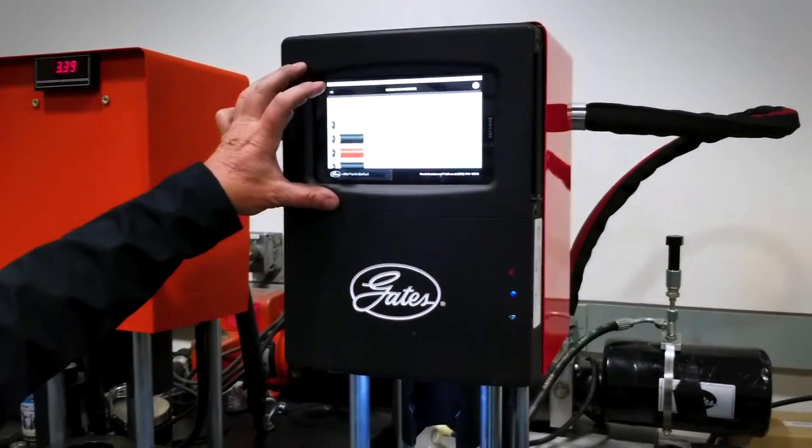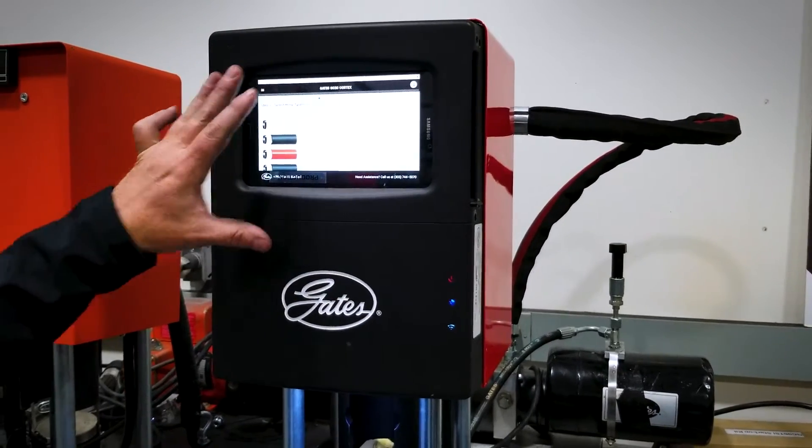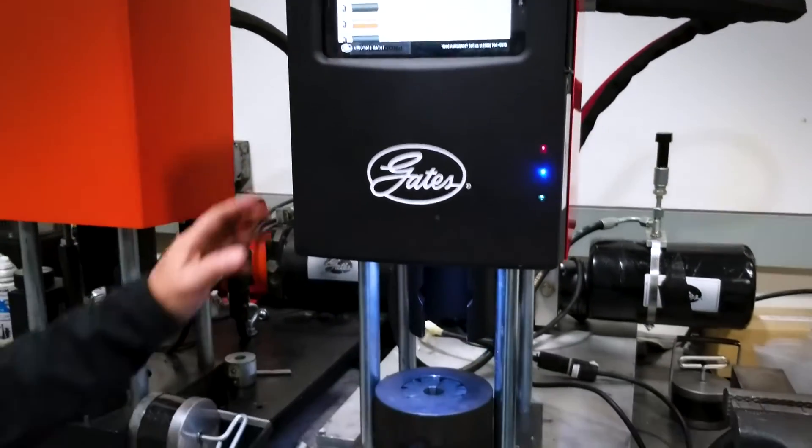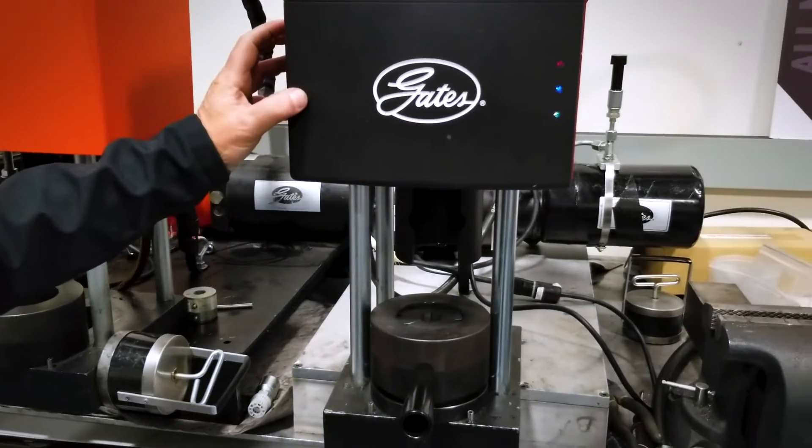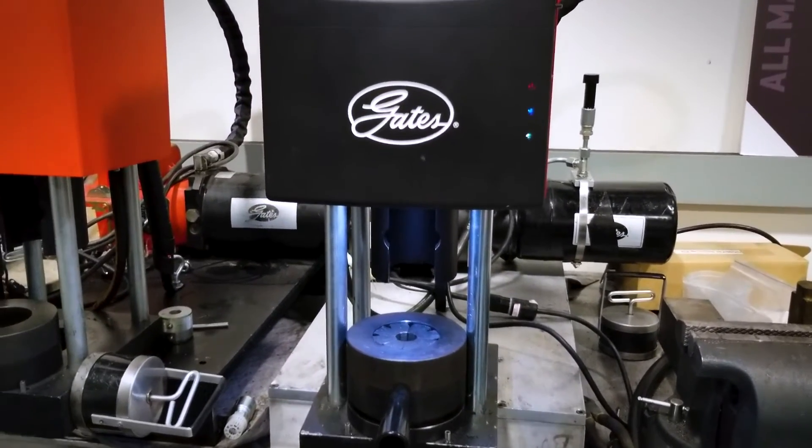This machine is a tablet interface, so all of your e-crimp is on board along with a lot of other information. You have a work light that illuminates the area where you're actually doing the crimping.